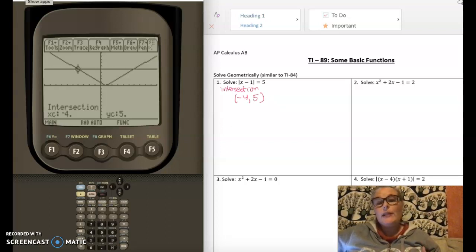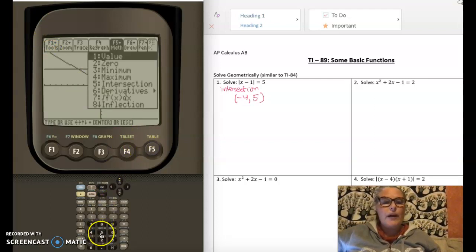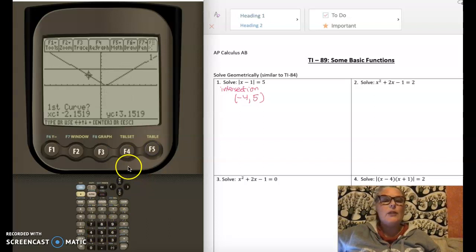I wrote down the intersection negative four, five. We'll talk about what it means in a second. And then you're going to do the same to find the second because you got to find all of the intersections. You're going to use the same method, F5, which is math, choice number five, which is in there. You can use the arrow key as well to get to intersection. Curve one, enter. Curve two, enter. But now I need to make sure I'm to the left, which is the lower boundary. I'm to the left of the actual intersection. I am right now. Enter. And then I need to use the arrow key to get all the way to the right of the intersection I want to find, which I am now. And it gives me the second intersection, which is six, five.